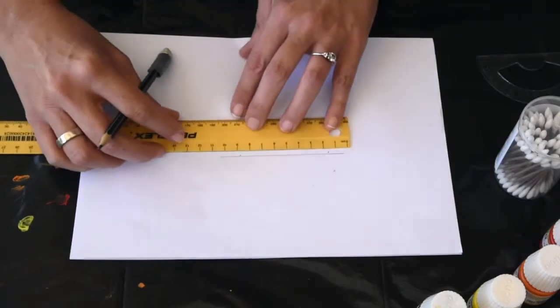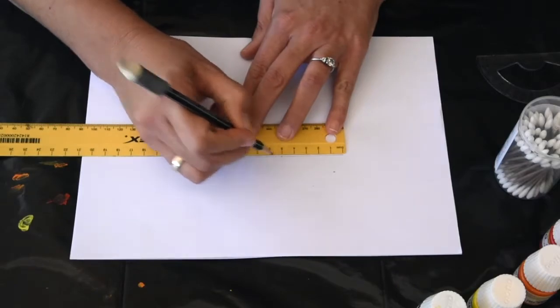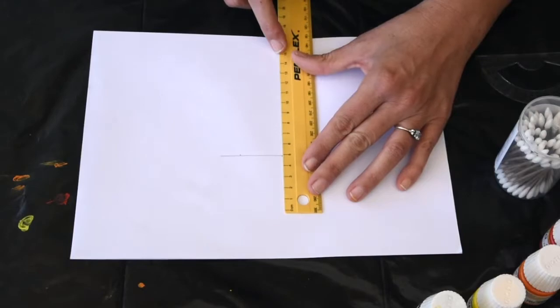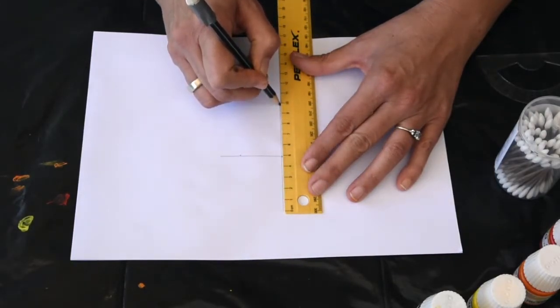What is half of 10? 5, that's right. So we're going to put a little mark there. And we're going to put our 5 on that mark and draw 10 cm again.